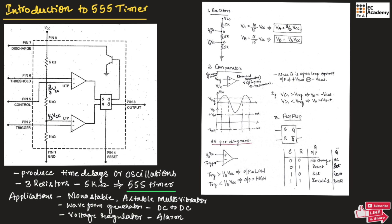At pin number 2, the trigger pin, if we apply a negative input — meaning the trigger voltage is less than 1/3 VCC — the comparator output will be high. If this high signal is applied to reset of the SR flip-flop, output Q will be 0, and Q-bar will be 1. Hence the output will go high, producing a high pulse.